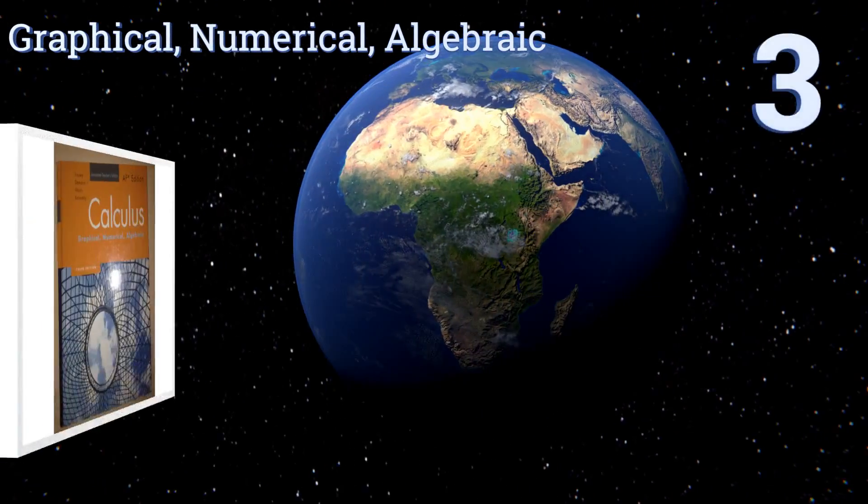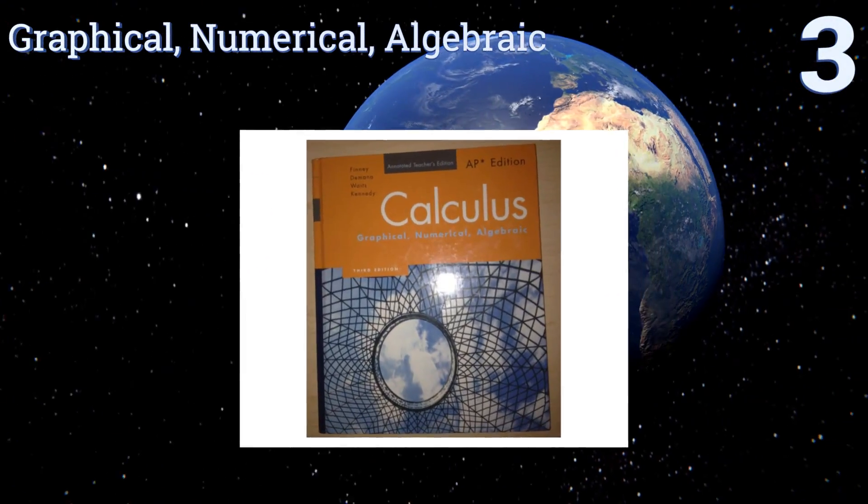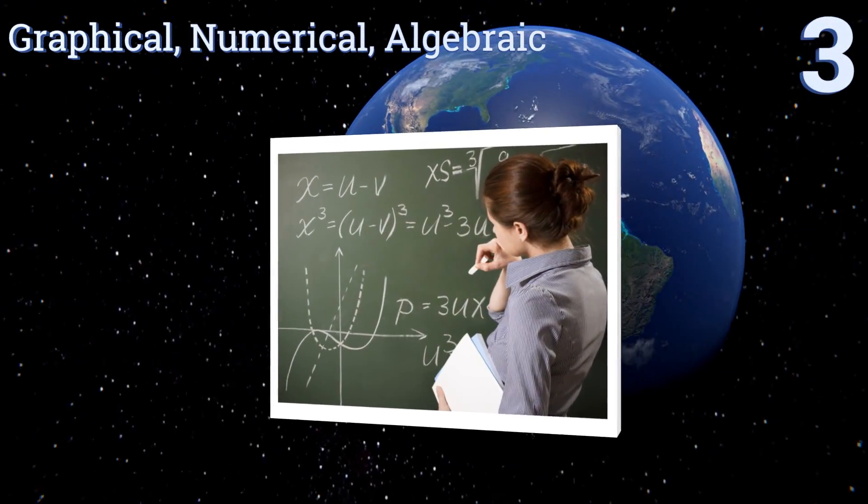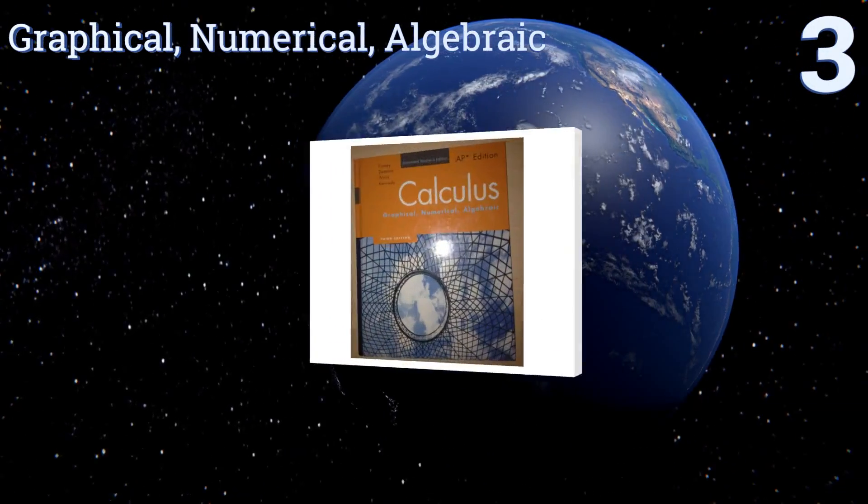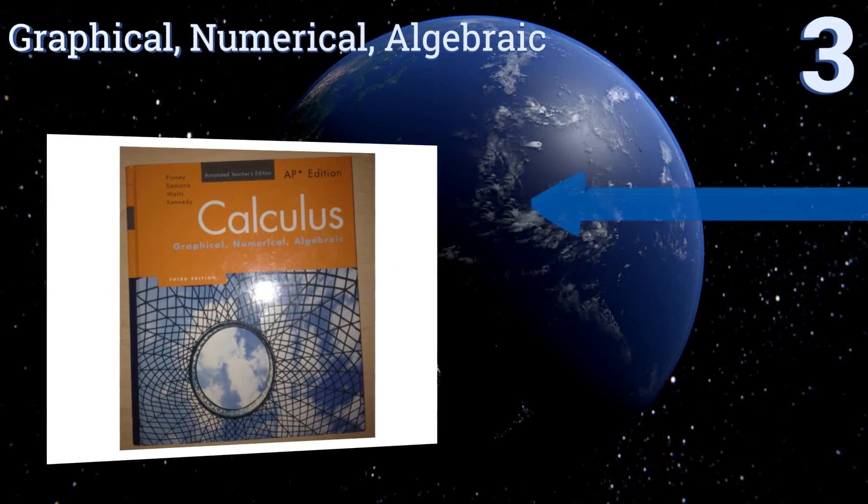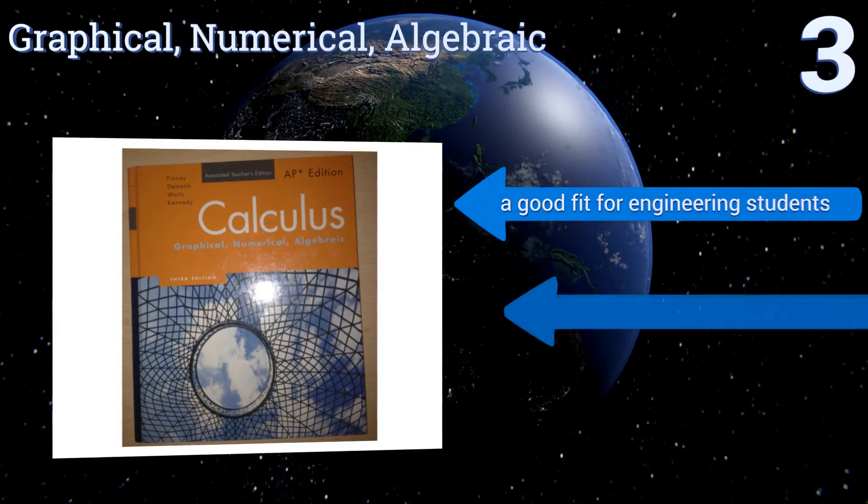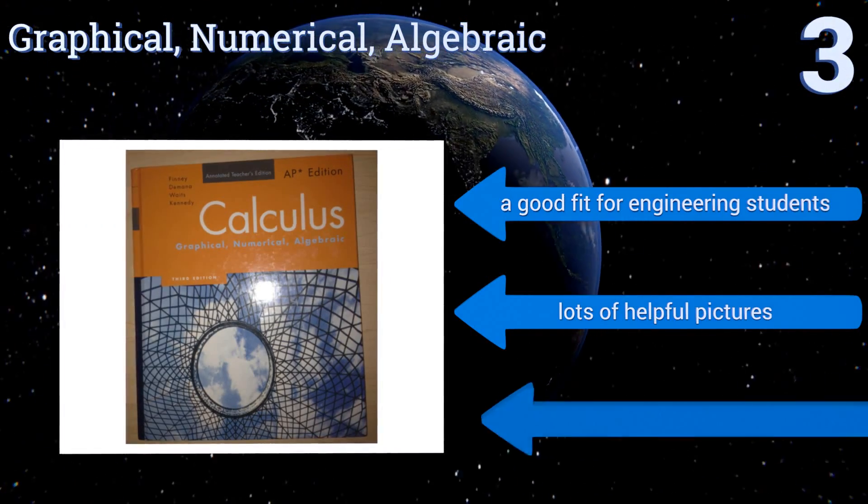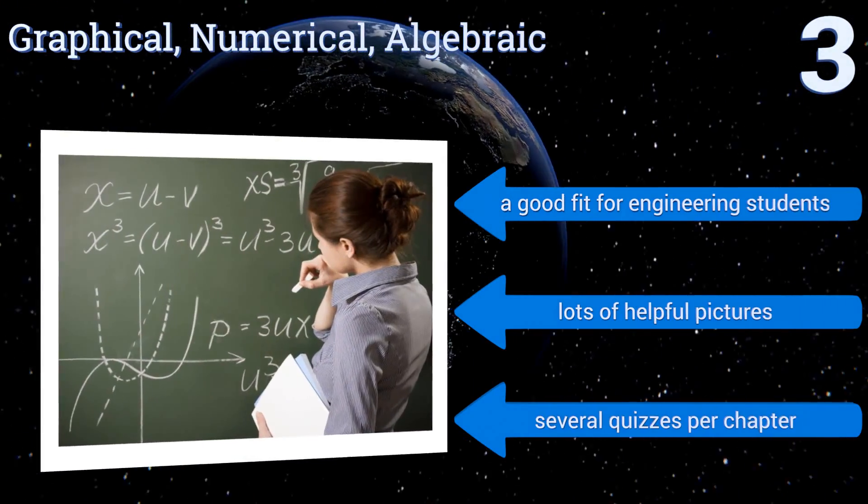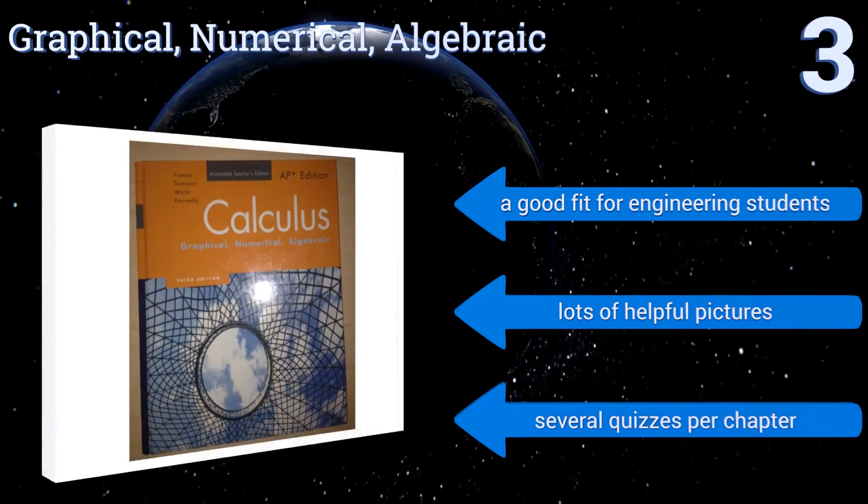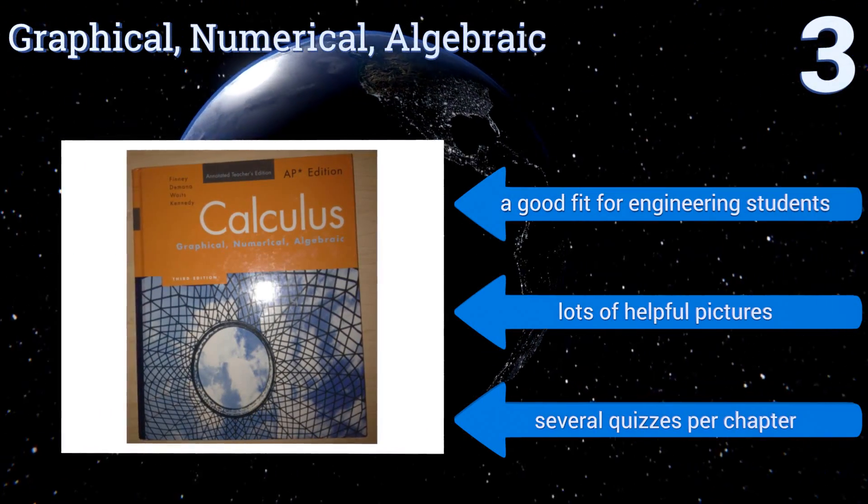Nearing the top of our list at number three, if you prefer textbooks that get straight to the point, Graphical Numerical Algebraic doesn't bury its concepts in flowery language or extended examples. This keeps the illustrations simple, which makes it less likely to confuse beginners. It's a good fit for engineering students and contains lots of helpful pictures, along with several quizzes per chapter.